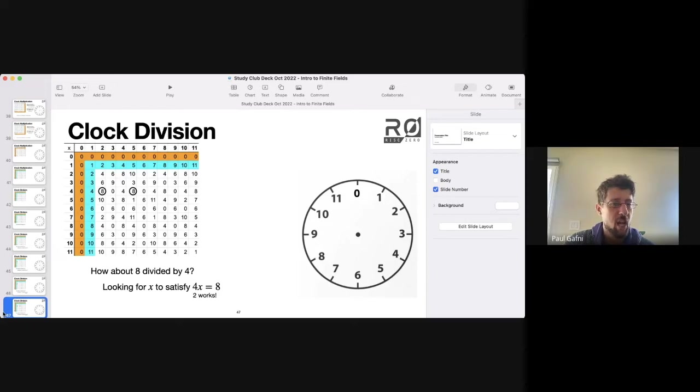But 4 times 5 and 4 times 8 also equal 8. So if I try to do the arithmetic question of 8 divided by 4 on this particular clock we're looking at, I end up sort of confused. 8 divided by 4 has multiple answers, it seems.